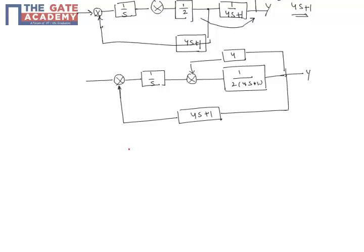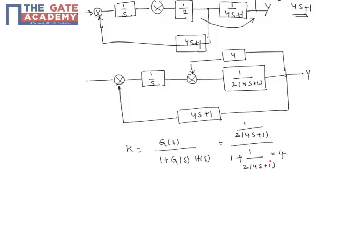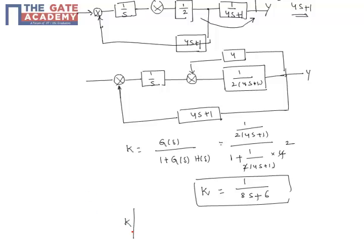So k equals the closed-loop gain, which is g(s) over 1 plus g(s) times h(s). Substituting: g(s) is 1 over 2 times 4s plus 1, and h(s) is 4. Simplifying this gives k equal to 1 over 8s plus 6. So once we find k, we evaluate at s equal to 0: k equals 1 over 8 times 0 plus 6, which is 1 over 6.